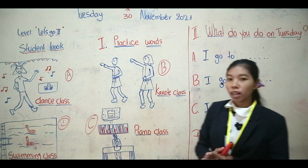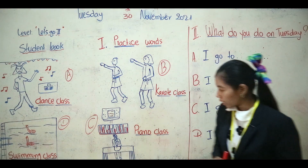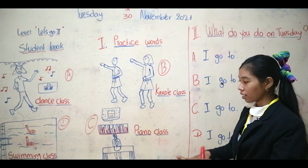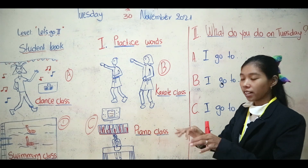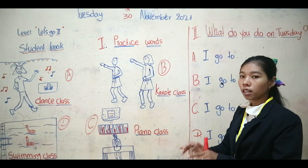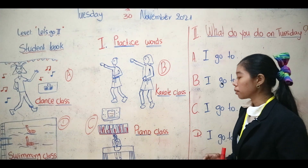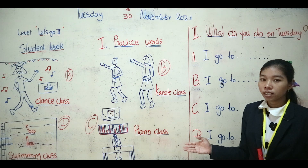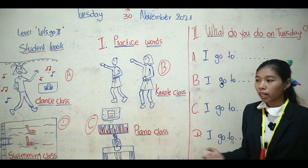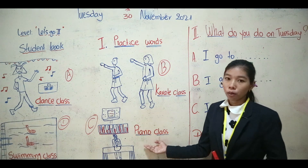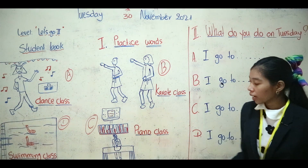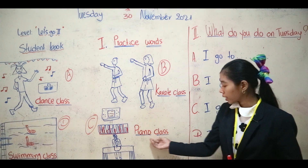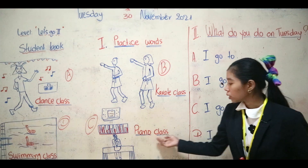Next, move to picture C. You sit down and do like this — yes, you see it. It's a piano! Piano class. We can spell it: P-I-A-N-O, piano, and C-L-A-S-S, class — piano class!